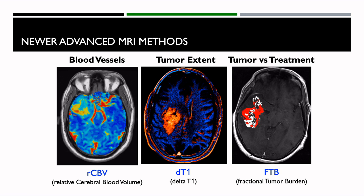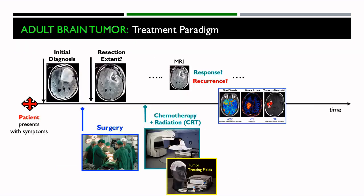The newer advanced MRI methods we have in place are: the relative cerebral blood volume method to give a map of blood vessels throughout the brain; the delta T1 method that gives us true tumor extent not confounded by bright spots from blood products; and together they give us tumor versus treatment effect within the enhancing lesion for tumors treated with chemoradiation therapy. These methods have been shown to be very relevant in the treatment of patients.